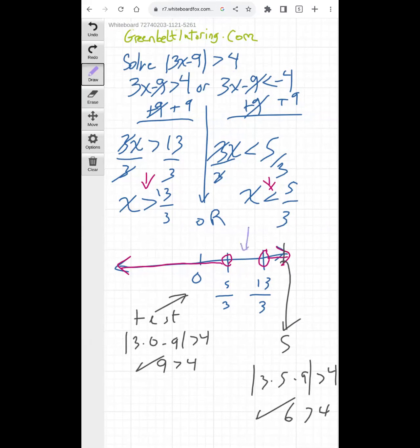And then if you plugged in a number, let's just say in this interval, say that was 2. If you plugged in 2 into the original inequality, you would have 3 times 2 minus 9 would have to be greater than 4. 3 times 2 is 6, 6 minus 9 is negative 3. Absolute value of negative 3 is 3, which is not greater than 4. So this doesn't, x equals 2 is definitely not part of the solution, so we're confident that our solution is correct.